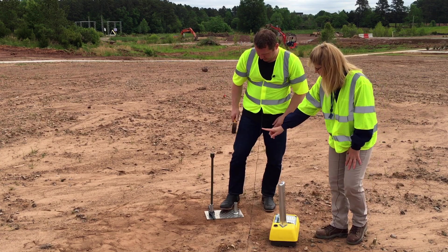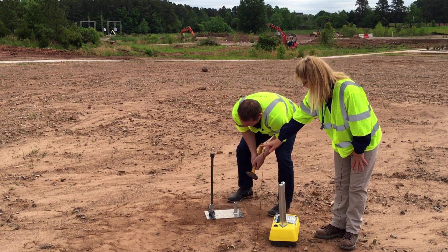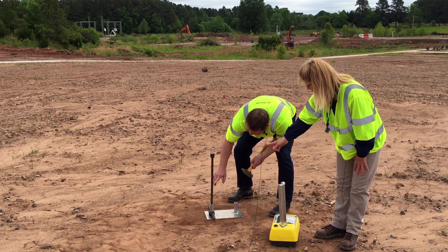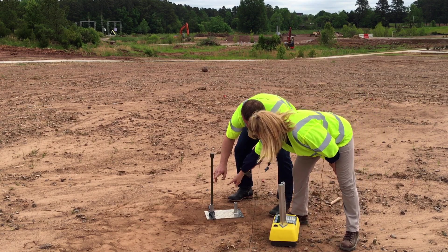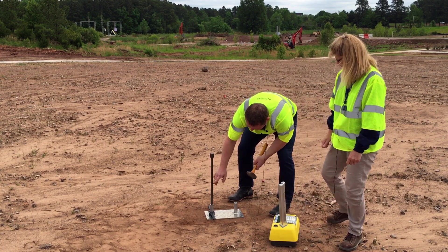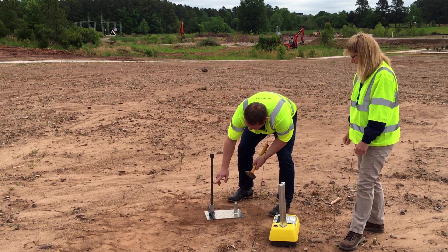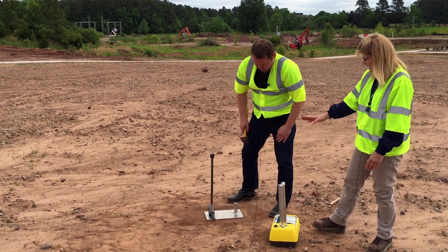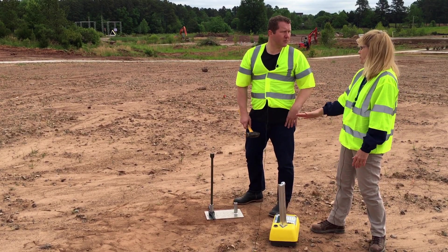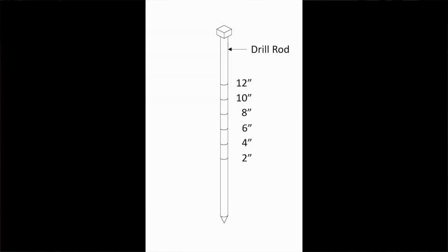There are marks on the drill rod every two inches. So for a six inch layer of soil, we'll drive it to the six inch mark — that's the third one from the bottom. Notice there's actually two inches extra built in on purpose, so if you're driving it to the six inch notch, you're actually driving it eight inches into the ground. Go ahead and drive it to six.